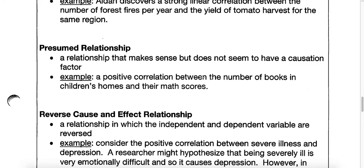Then we have a presumed relationship — a relationship that makes sense but does not seem to have a causation factor. We assume a lot of things. For example, the number of books a child has in their home on the x-axis would cause their math scores to go up. Maybe they're a good reader, a really good student, and having a lot of books means higher math scores — we could assume that. But we could also have strong math students who do not have very many books in their home.